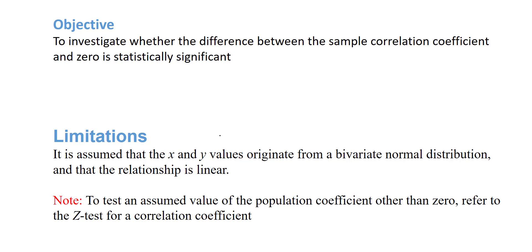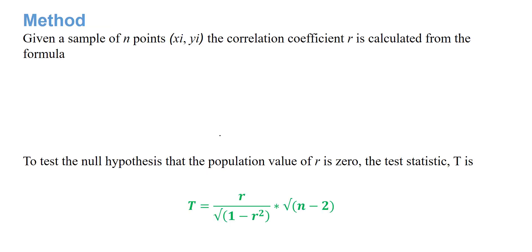The method for this test is: given a sample of n points (xi, yi), the correlation coefficient r is calculated from the formula r equals the summation of (xi minus x bar) times (yi minus y bar) all over...